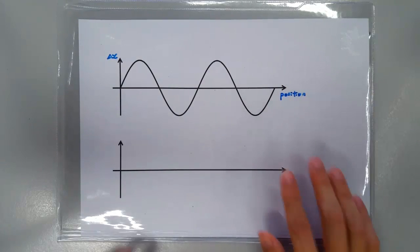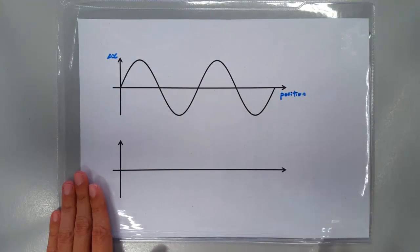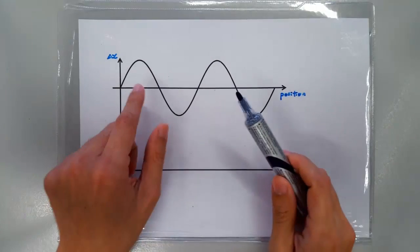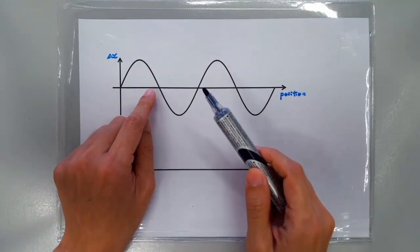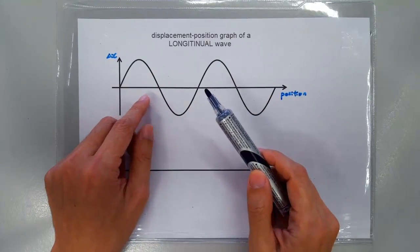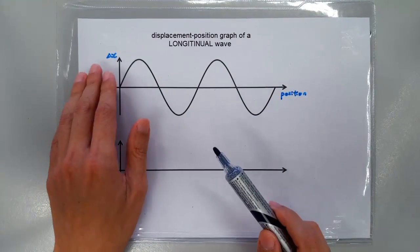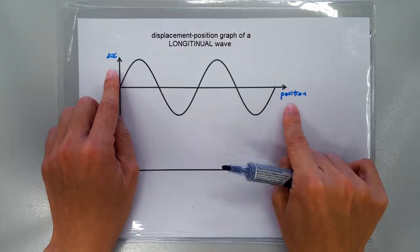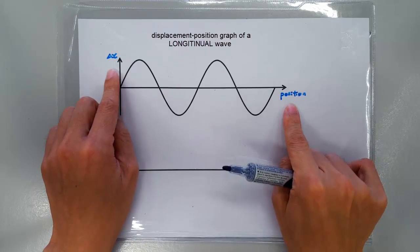In this video, I'm going to explain how you can tell a region of compression and rarefaction when given the displacement-position graph of a wave.